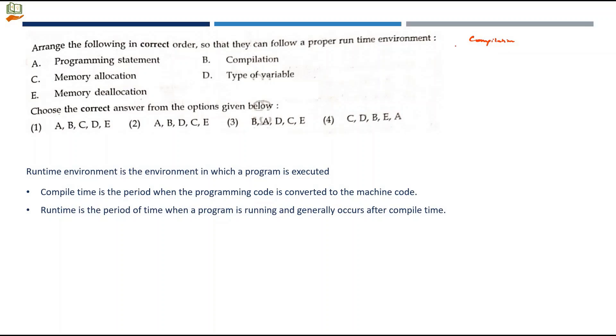When compilation occurs, it will take every statement in the source code and start taking the tokens. It segments the program statement into different tokens. From the statement, we pick up the variables based on the type of variable. We allocate memory and once the program is over, the memory will be deallocated.